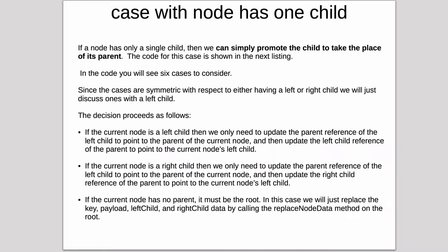Now if we have one child, things get a little more complicated. So you can see there's a long slide here, and we'll also look at some diagrams to explain this. But if the node has a single child, then we can simply promote the child to take the place of its parent. If the node only has a single child, then the child of the node we're deleting, we can promote that to take the place of its parent.